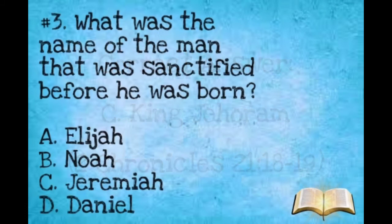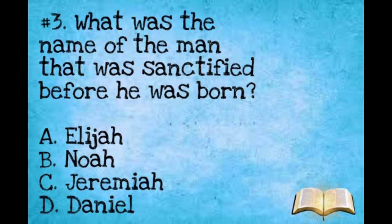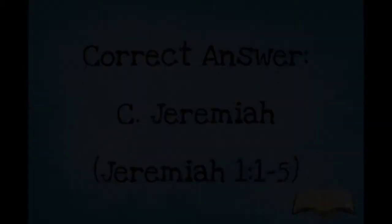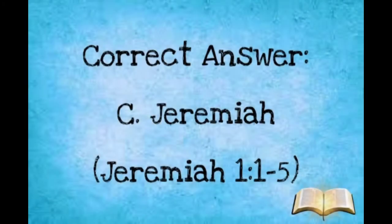Number three: What was the name of the man that was sanctified before he was born? A: Elijah. B: Noah. C: Jeremiah. D: Daniel. The correct answer is letter C, Jeremiah.